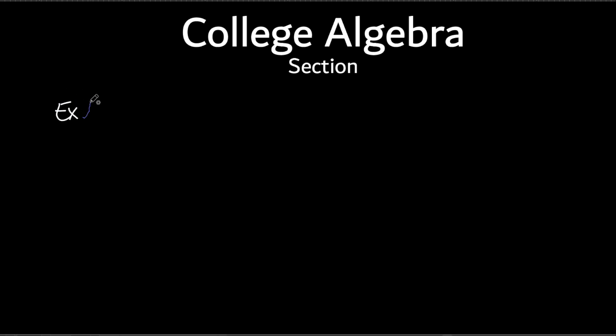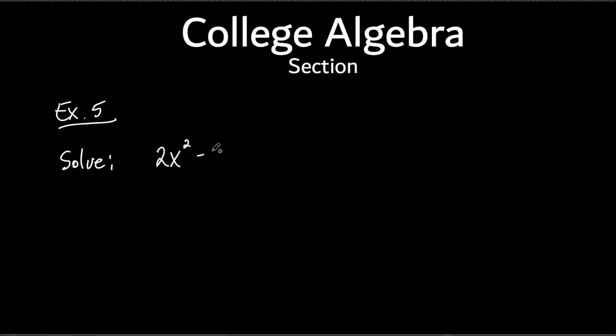Okay, we're going to do one more example — it's kind of what we did yesterday but with just a little bit of an added thing. So this is Example 5. It says to solve for x. It's the same section; we just didn't have enough time to get to this yesterday. We're going to solve by completing the square. Some of these you may be able to factor, but you cannot factor this one because the answer comes out kind of crazy — it comes out with a square root.